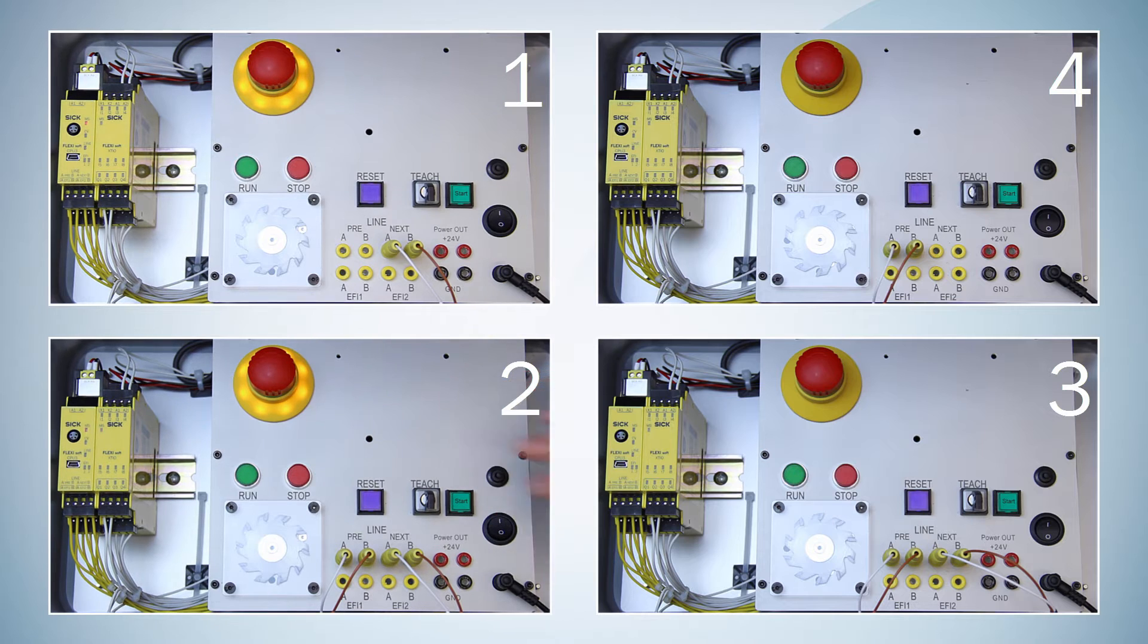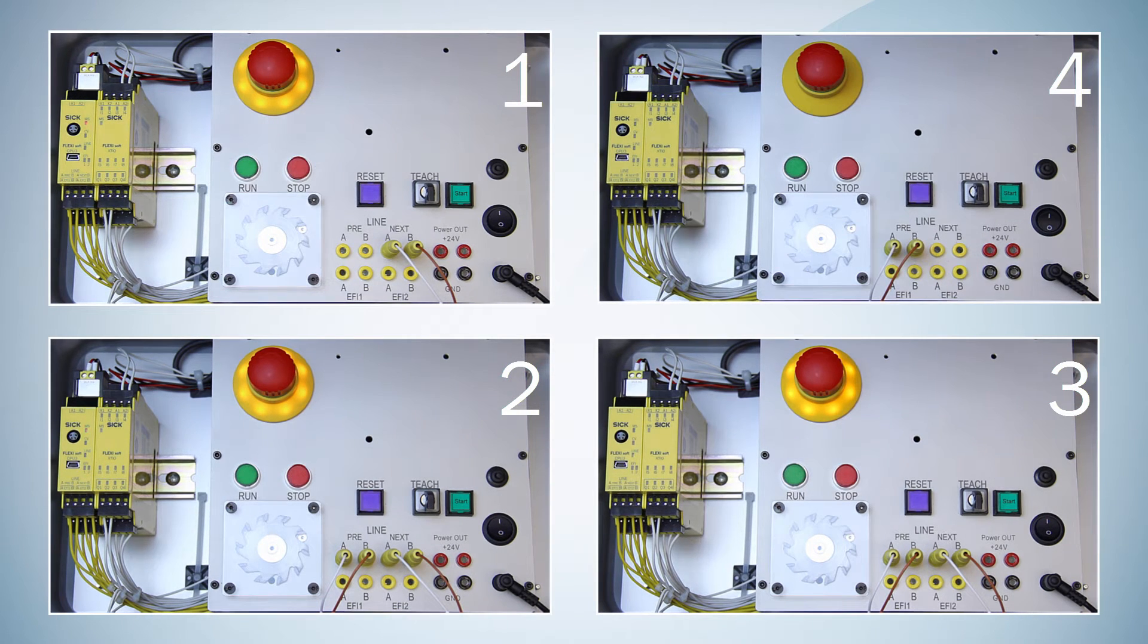If the configurations and wiring are correct, every station will change to the status T-T required and the Line LED flashes green. Now we simply have to confirm the topology of the Flexi-Line system.